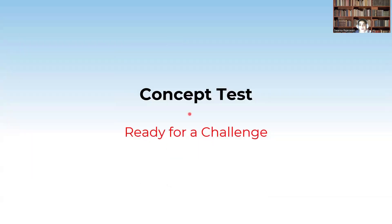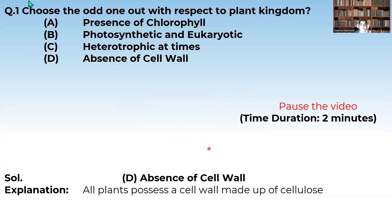Now let us take a small concept test. Choose the odd one out with respect to the plant kingdom. The options are: presence of chlorophyll, they are photosynthetic and eukaryotic, they are heterotrophic at times, and absence of cell wall. Which option is wrong among the following?